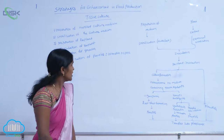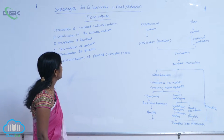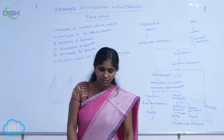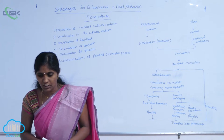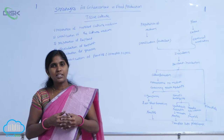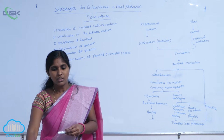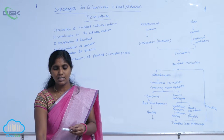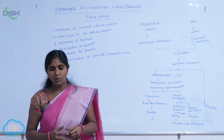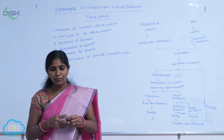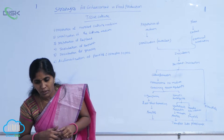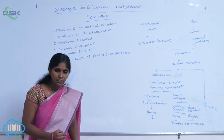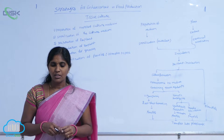In the sterilization procedure, the culture media go for sterilization. For sterilization, the autoclave method is implemented. The autoclave is the apparatus — it is a sterilization apparatus. In the autoclave, at 15 pounds of pressure and 121 degrees of temperature, the nutrient medium is held for 15 minutes.